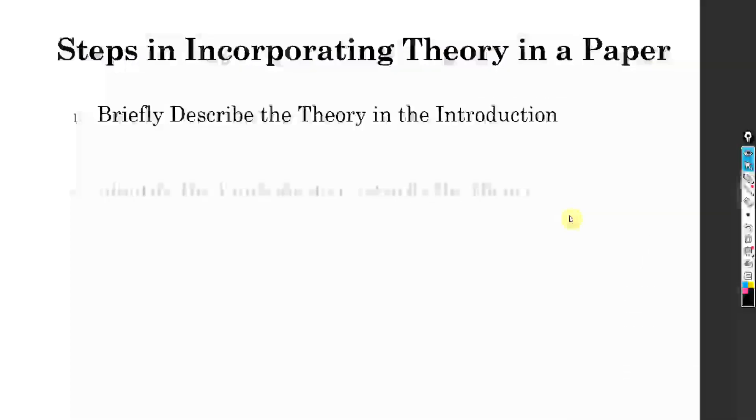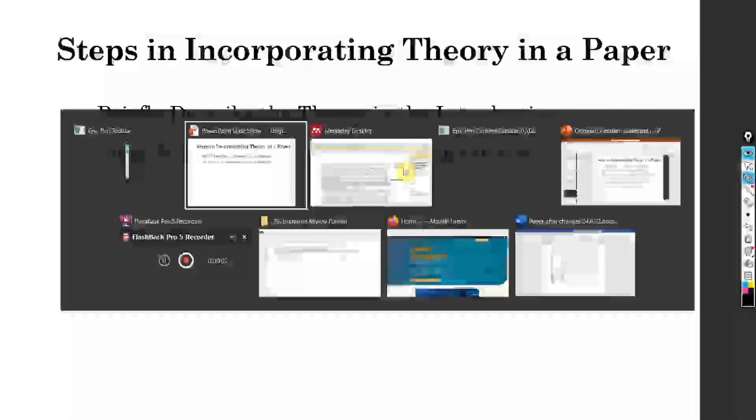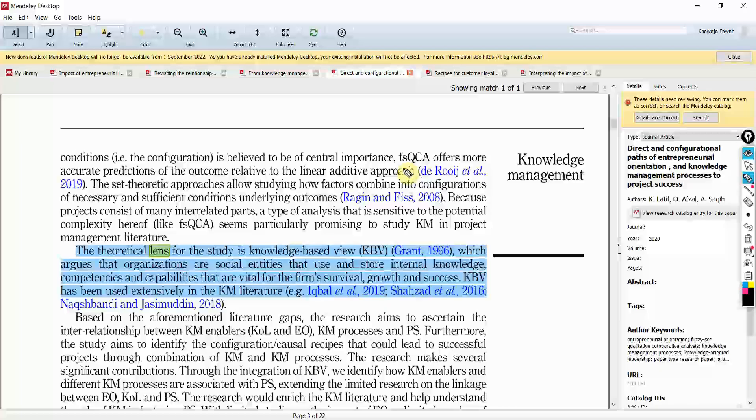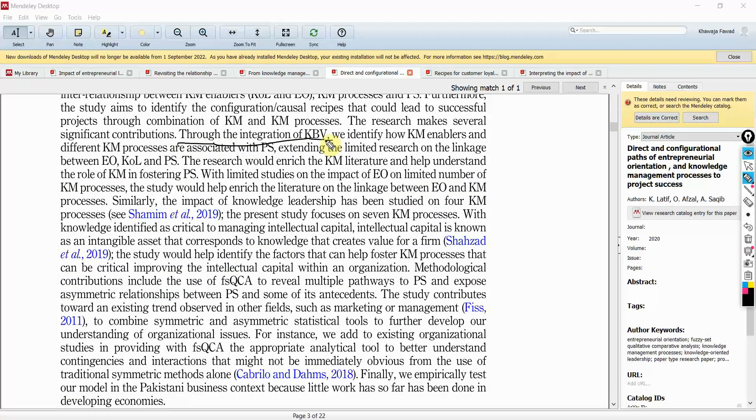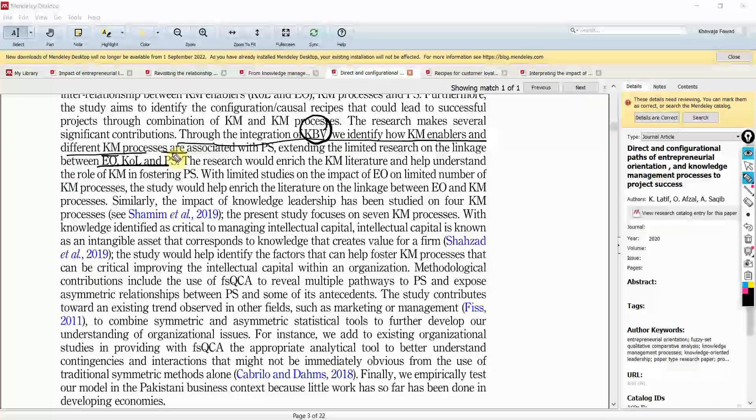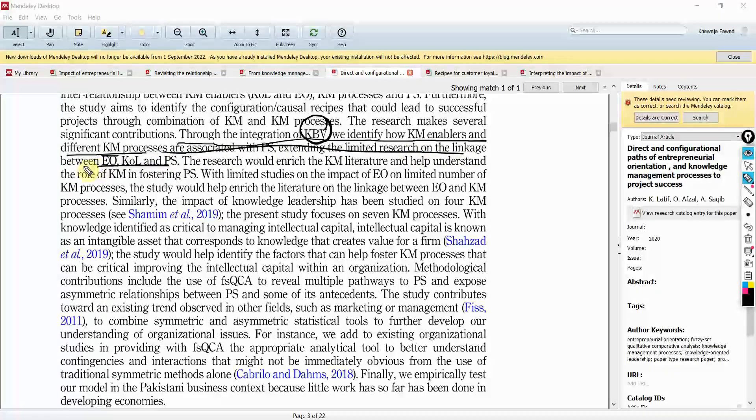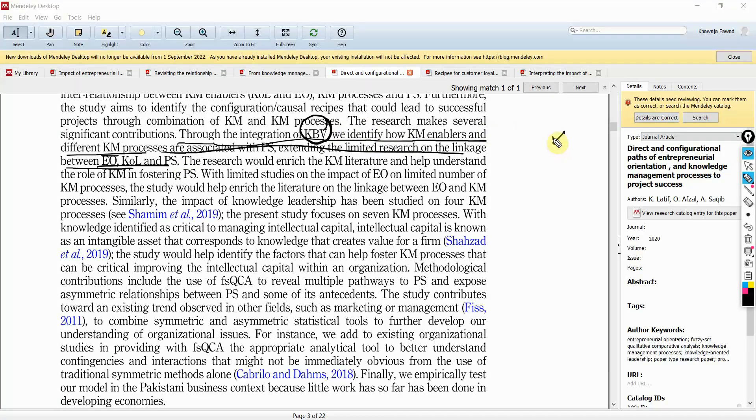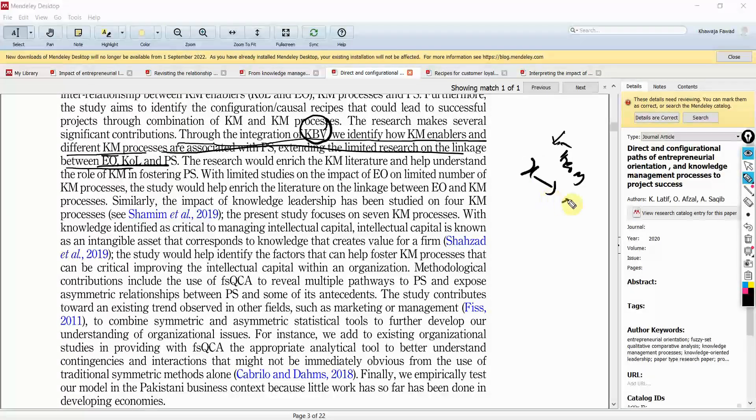the next step is identify the contribution towards the theory. So, what is it that you are doing? That is, you are contributing towards the theory. And this is done in the contribution section in the introduction. Where? Have a look here. Through the integration of KBV, we identify how KM enablers and different KM processors. What you are doing is you are integrating knowledge-based view to explain these relationships here.